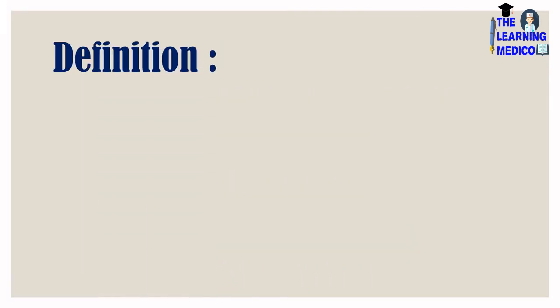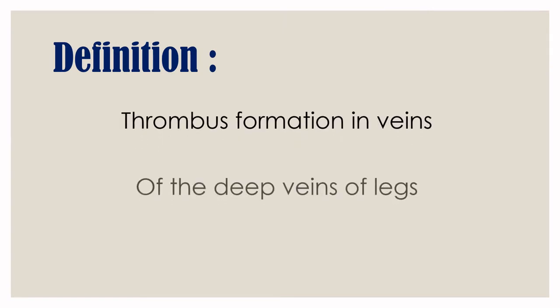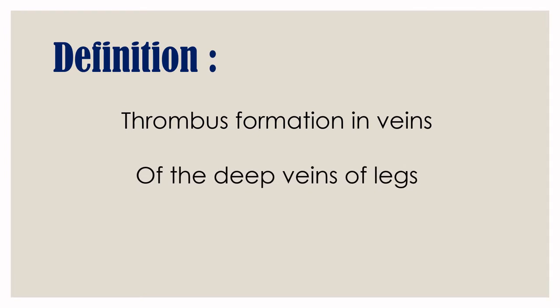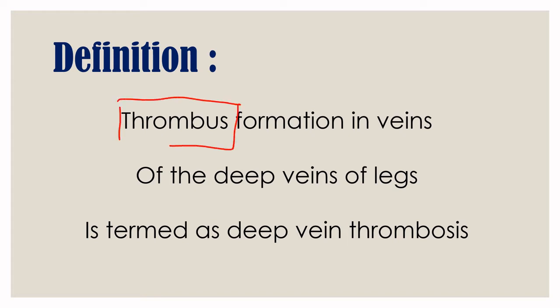Let's start with the definition. Deep Vein Thrombosis is defined as thrombus formation in the deep veins of the legs. Thrombosis is a type of blood clot — a blood mass which forms in the veins.